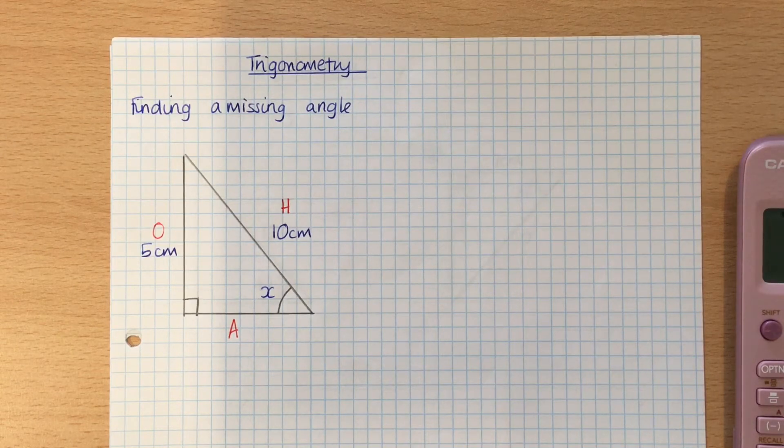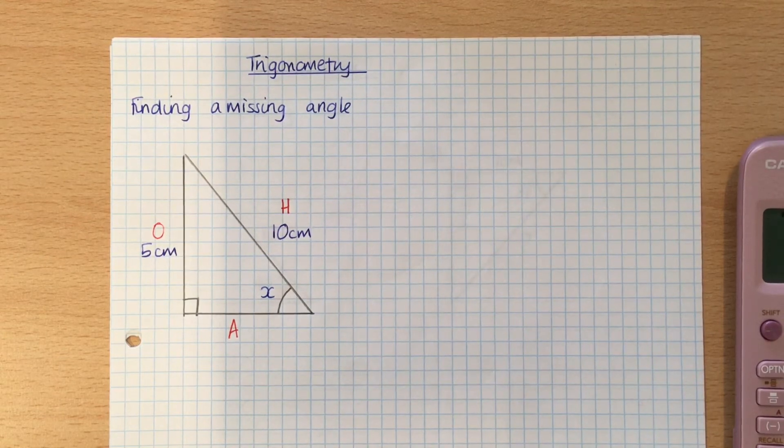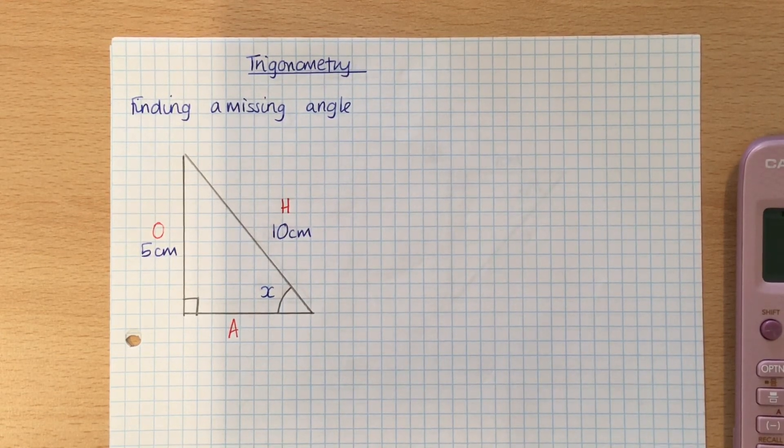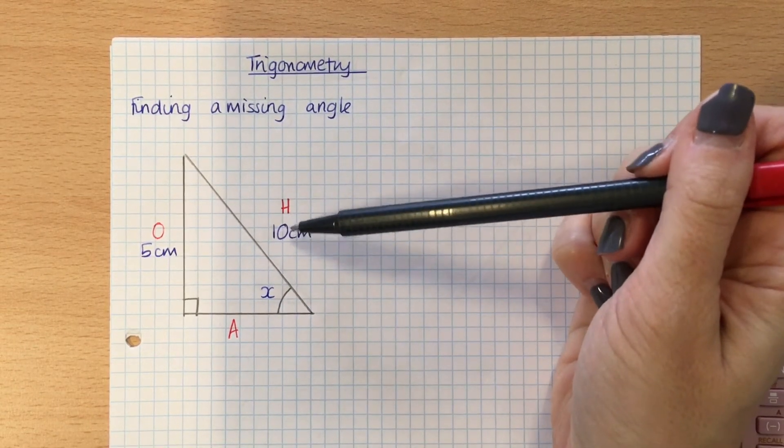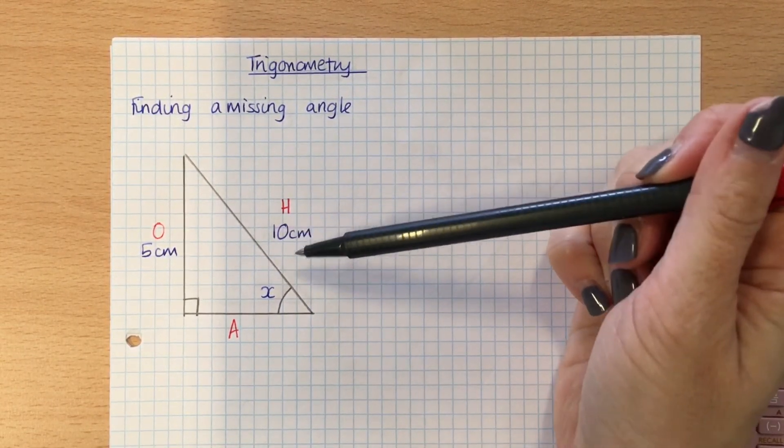The next thing I need to do is decide which side I don't need. What I tend to do is I say if there's nothing by it, if it hasn't got a friend, then it's not needed. So if I look at this, H has got the 10 centimeters, so that will be needed.